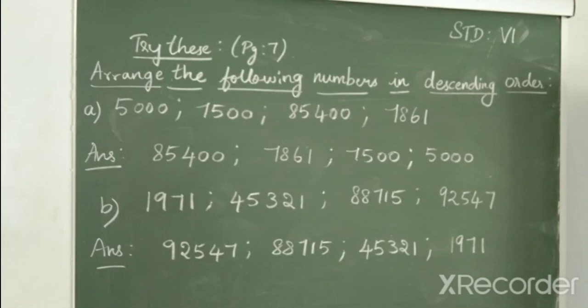So, look at the sum: 5000, 7500, 85400, 7861. So, here 4-digit numbers and a 5-digit number is given. So, we are arranging from big to small. So, obviously the 5-digit number will come first. So, 85400.